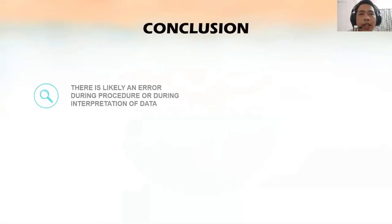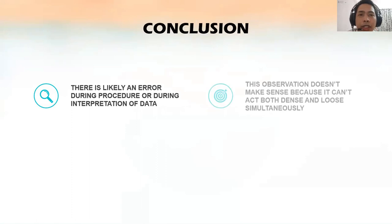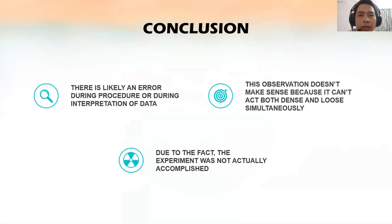The conclusion is: One, there is likely an error in procedure or during interpretation of data during this experiment. Two, the observation doesn't make sense because a single sand specimen cannot act both simultaneously which is it acts like very dense and very loose. And the third one is due to the fact that there is an error in this experiment, the experiment was not actually accomplished. Thank you everyone.